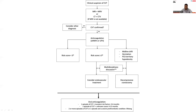Regarding oral anticoagulation duration: if there is one episode of CSVT with transient risk factors, three to six months of oral anticoagulation is required. If there is one episode of CSVT with unknown cause, then six to twelve months of oral anticoagulation is required. If there are two or more episodes of CSVT, or one episode with a severe prothrombotic condition, then lifelong oral anticoagulation is required.